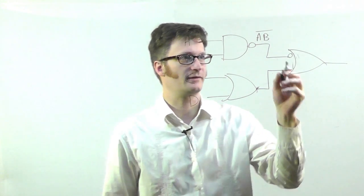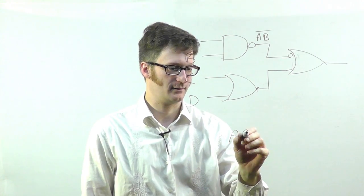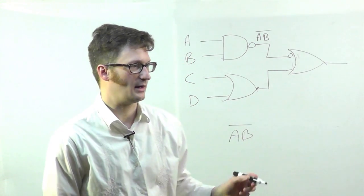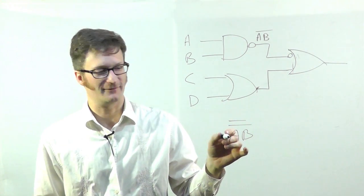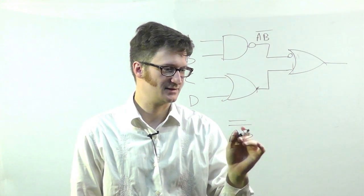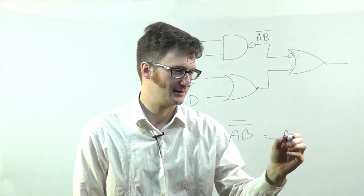So if I have A B bar and I invert it one more time, the inversion of an inversion is just the sum. So this equals A B.